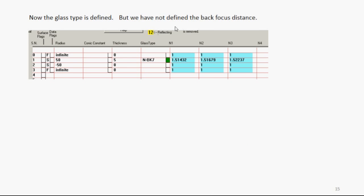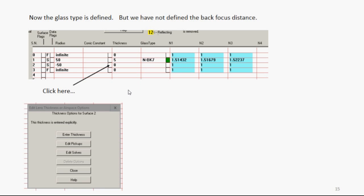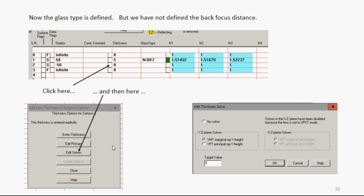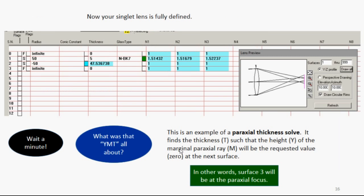But you haven't defined the back focus distance yet, so you have to do that. Click here in the box for surface 2 thickness, another window opens, and you then click Edit Solve. We're going to add a solve to this lens. The box opens, you select the YMT, and then click OK and close.